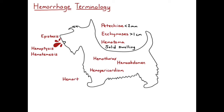Hemarthrosis is used to describe hemorrhage into the joint. There are two terms used to describe hemorrhage in the feces, and it helps us localize the hemorrhage as either upper GI or lower GI. Upper GI means the stomach and small intestine, and lower GI means the large intestine and rectum.